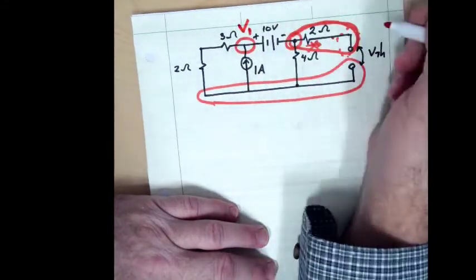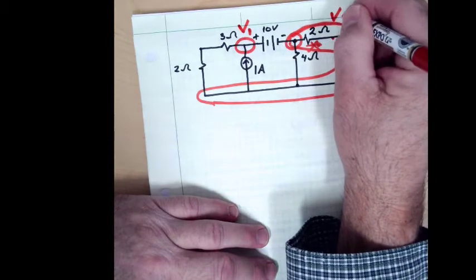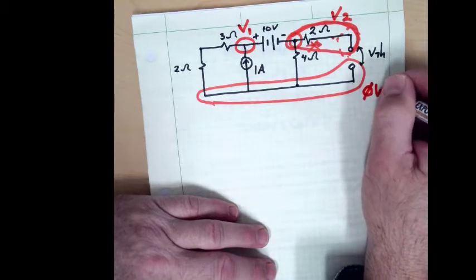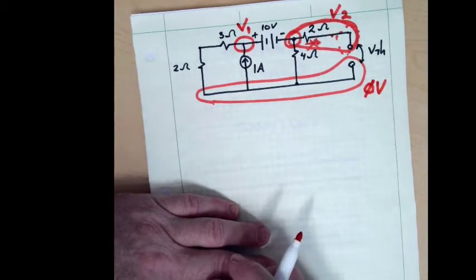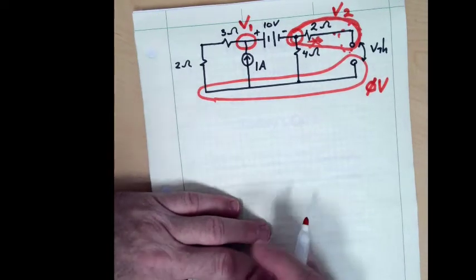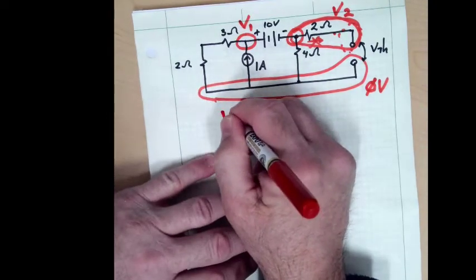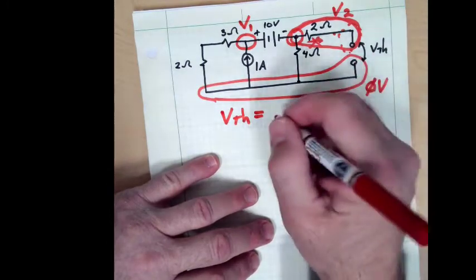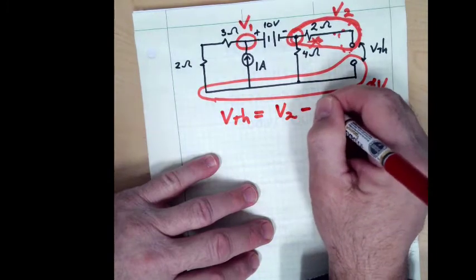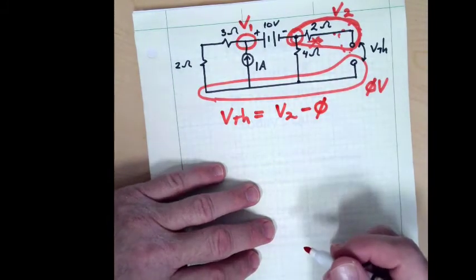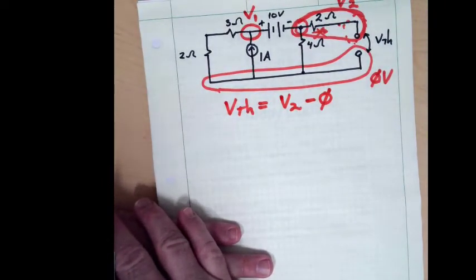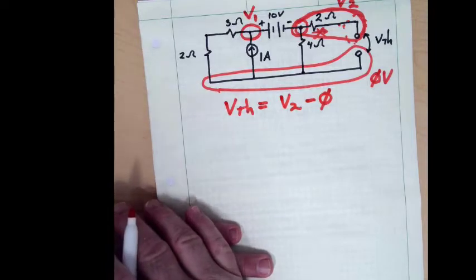We're now down to a node called V1, a node called V2, and our zero volt reference node. Everything looks good — we're down to two unknown nodes. We should recognize that the Thevenin voltage would simply be the voltage of this node minus the voltage of that node, so it would just be V2 minus zero. It doesn't look too bad to find the Thevenin voltage doing nodal analysis.